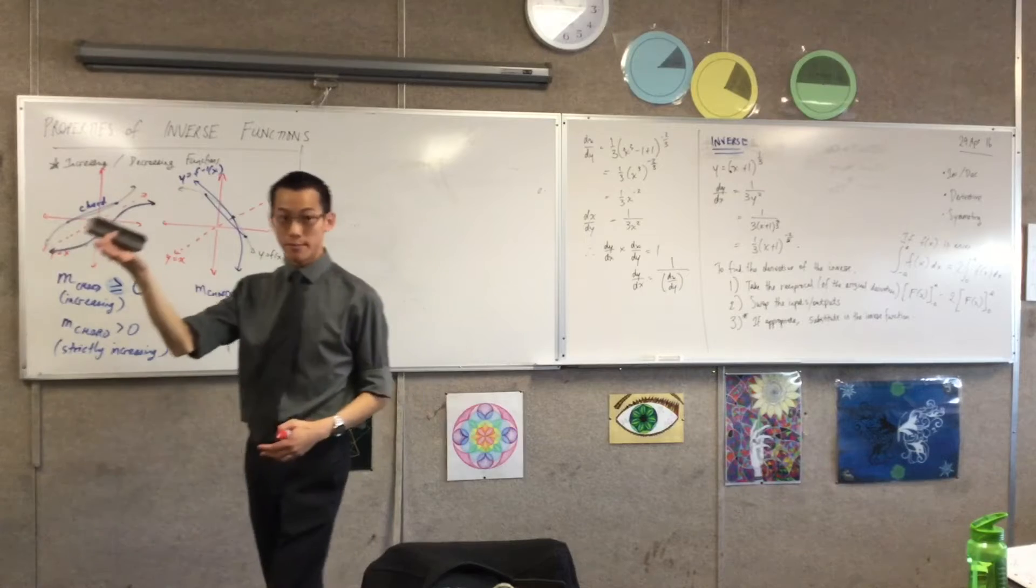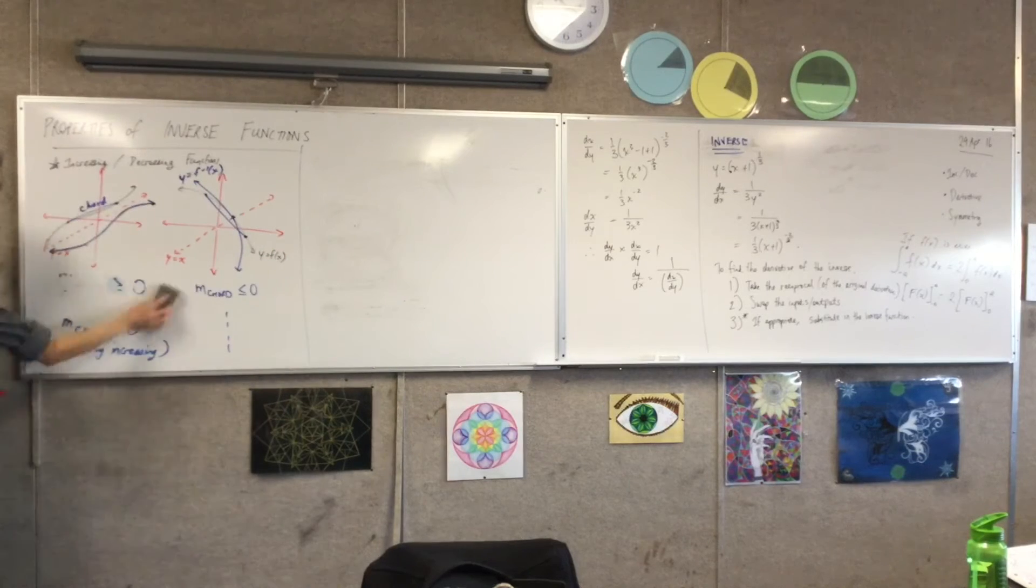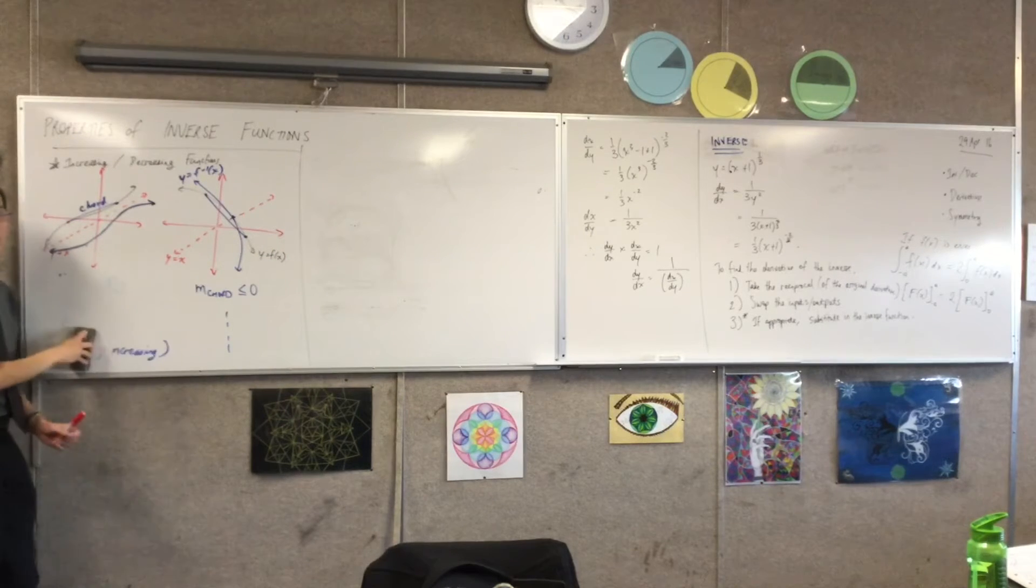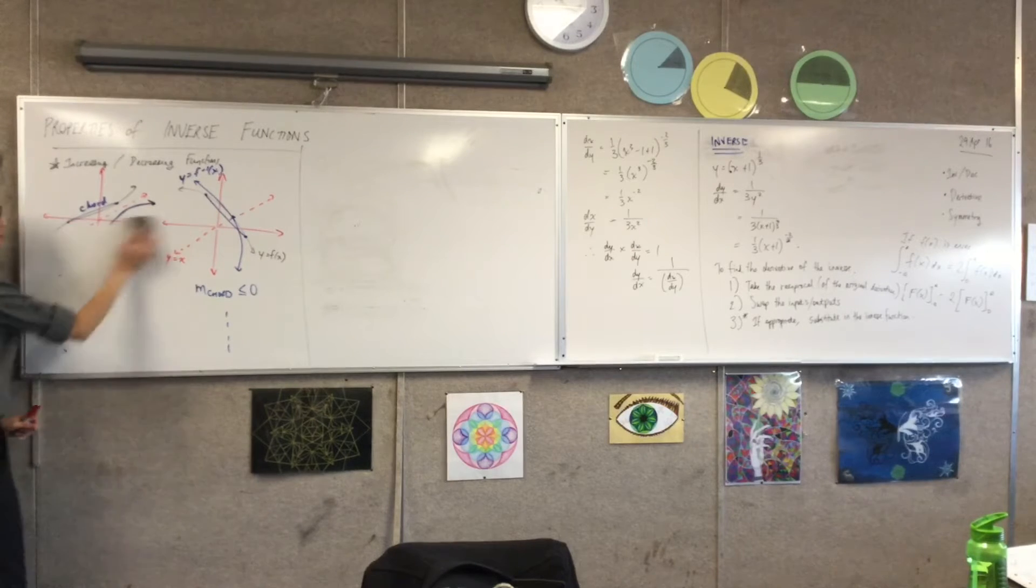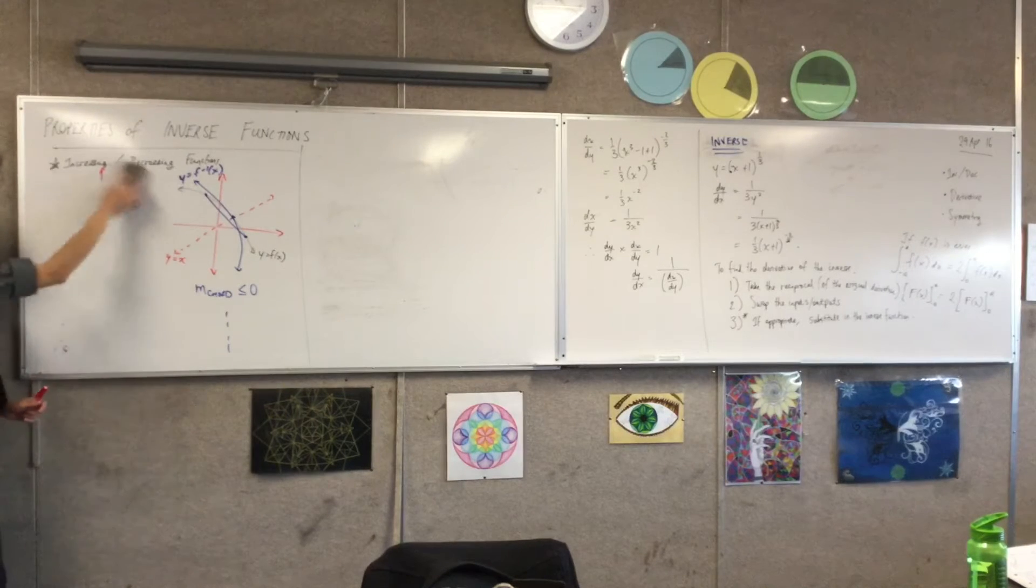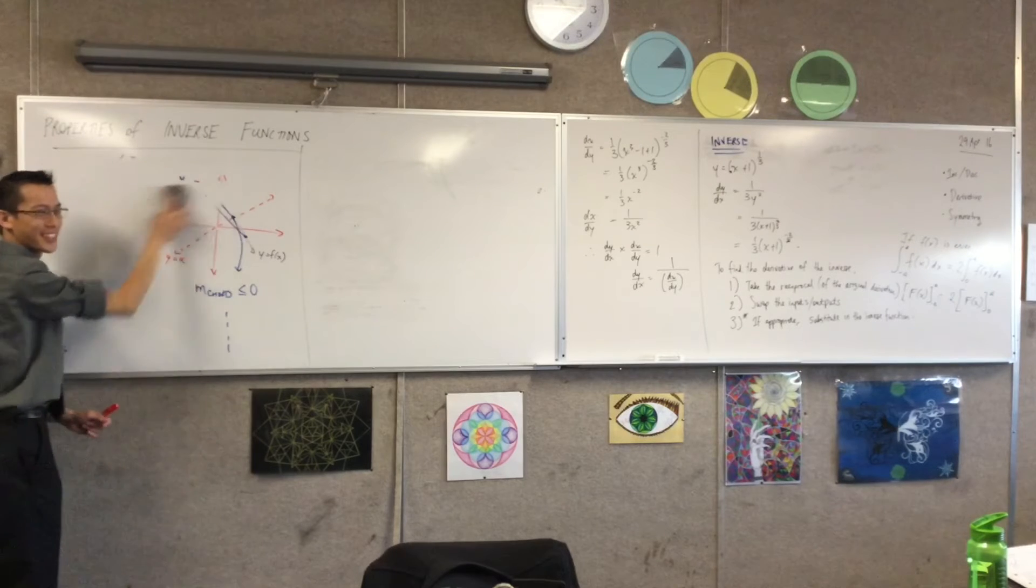You can either be odd or even, right? Now, think for a second. We're talking about inverse functions, not inverse relations. So one of those kinds of symmetry is not very useful to me. Which one is it?